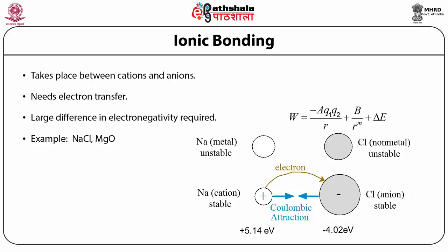When atoms are brought too close to each other, their electron clouds start overlapping. Since the Pauli exclusion principle cannot be violated — as two electrons cannot occupy the same quantum state — this leads to a repulsive force between the ions. The total potential energy of the system can be expressed as −AQ1Q2/R + B/R^M + ΔE, where B and M are constants determined empirically and B/R^M is the repulsive energy. ΔE is the difference between the ionization potential of cations and electron affinity of the ions, typically a very small number.